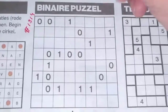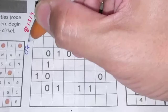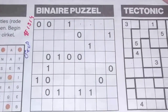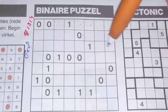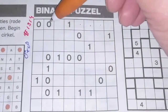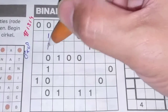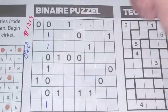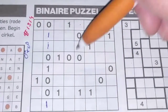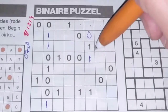Let me count: 1, 2, 3, 4, 5, 6, 7, 8 — it's an 8 by 8 binary puzzle. That means in a row or in a column there are always four 0s and four 1s. So let's get started.